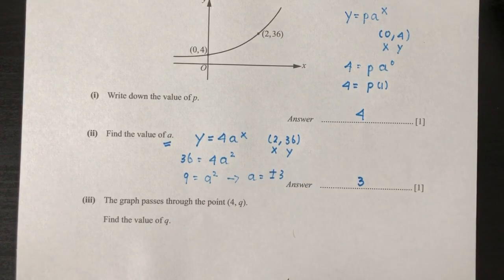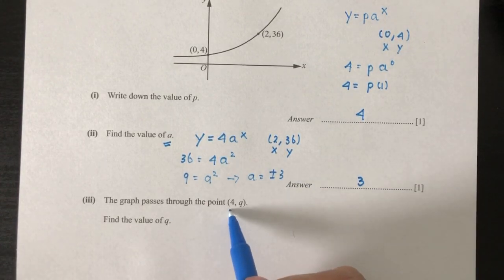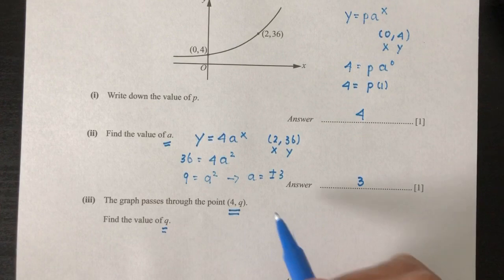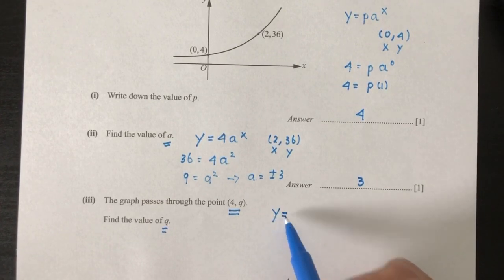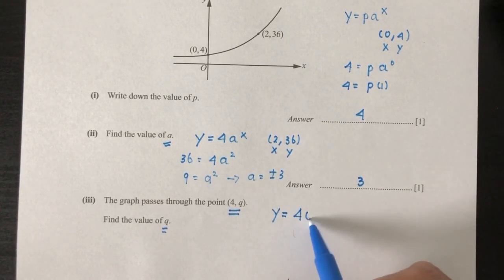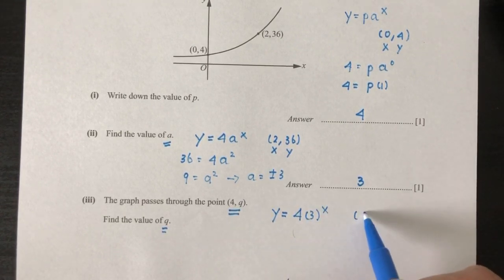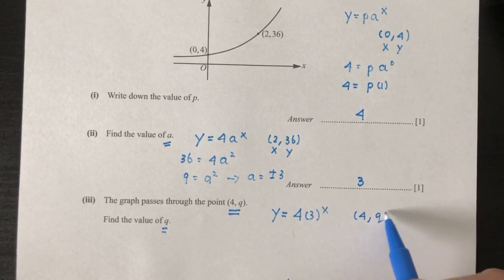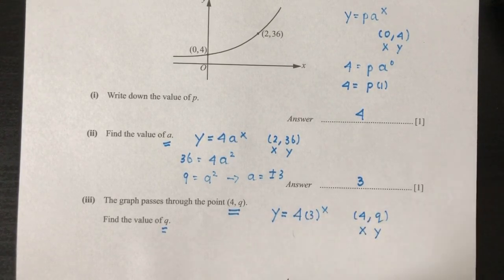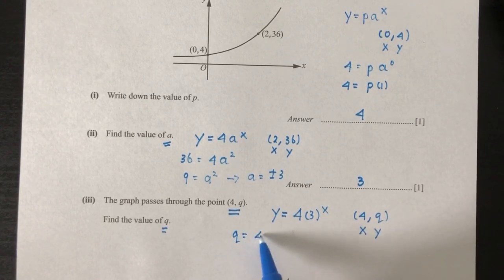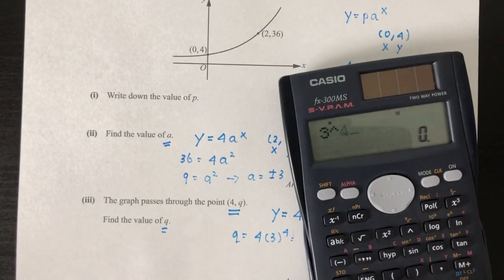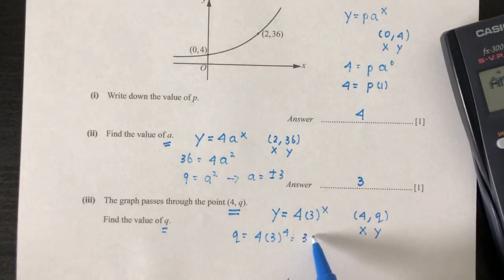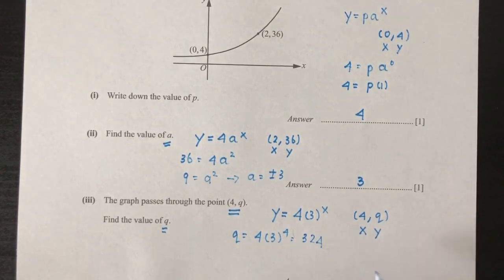For part 3, the graph passes through the point (4, q) and we must find q. Since the equation for the curve is y equals 4 times 3 to the power x, and x equals 4, we substitute: q equals 4 times 3 to the power 4, which gives 324. So q equals 324.